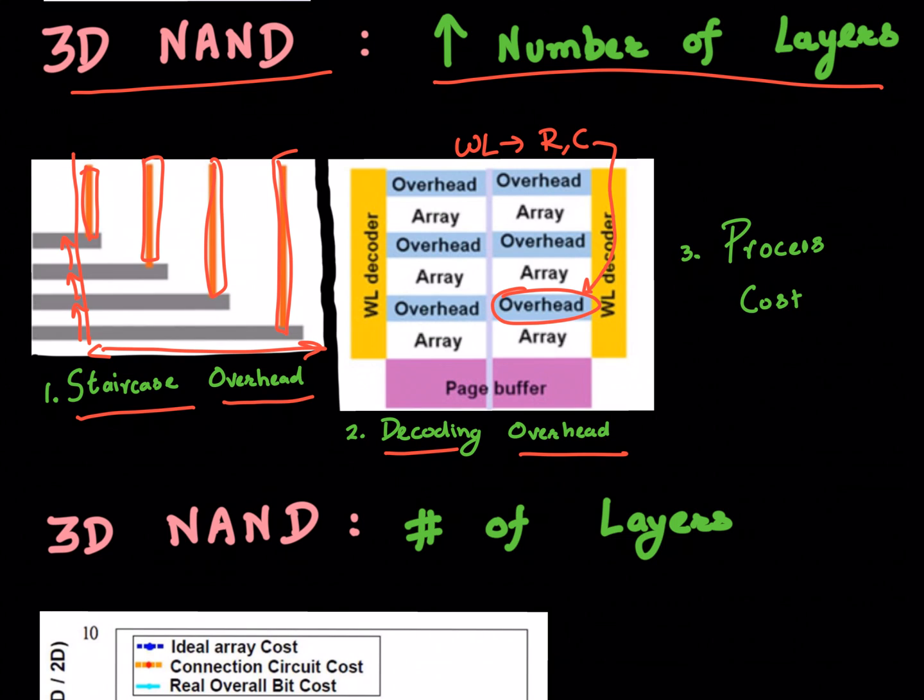Now you would need more complex decoding to process the data from these word lines and bit lines, and the amount of overhead which results from that would also increase. Not to forget about the process cost, which would also increase.